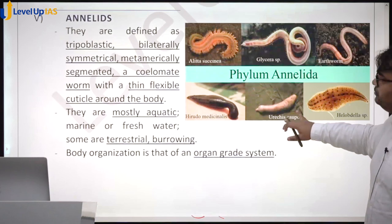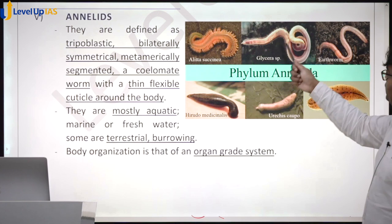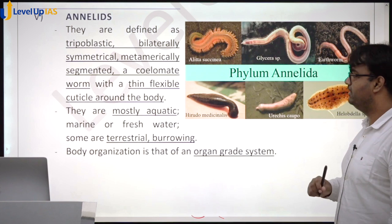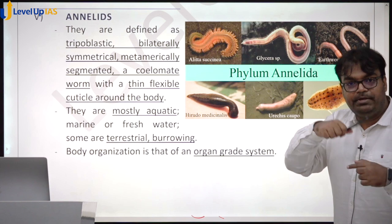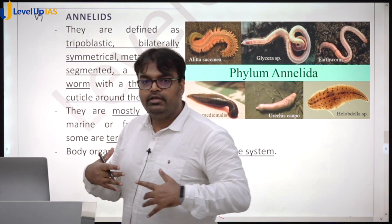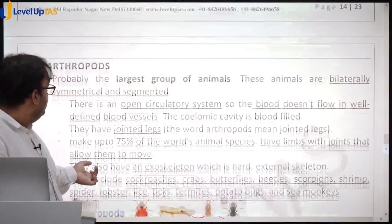Annelids are triploblastic, bilaterally symmetrical, segmented, and coelomate — they have a true internal cavity. This represents advancement: once a coelomic cavity develops, specialized organs can develop within it. They have an organ-grade system. Examples include earthworms and leeches.